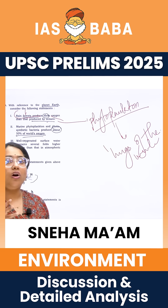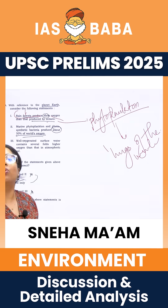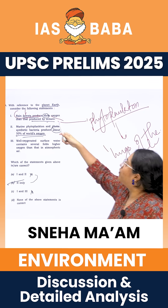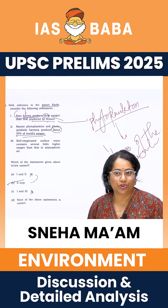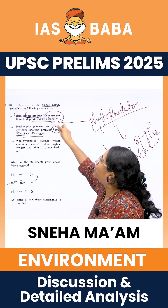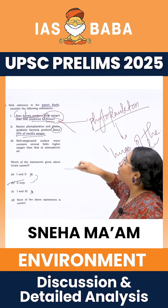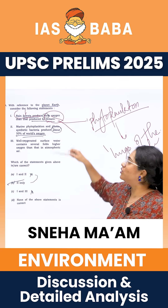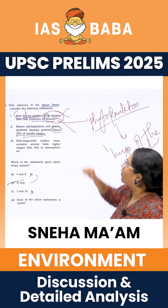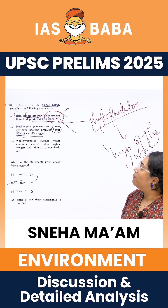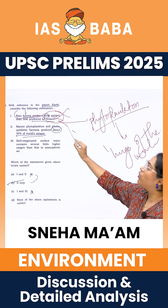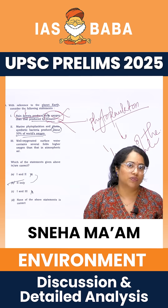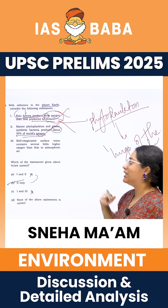If you look at the total amount of oxygen in the world and who produces more, you will see that the oceans produce more oxygen than your rainforests. So the first statement is wrong. Statement 2: Marine phytoplankton and photosynthetic bacteria produce about 50% of the world's oxygen — that is correct.